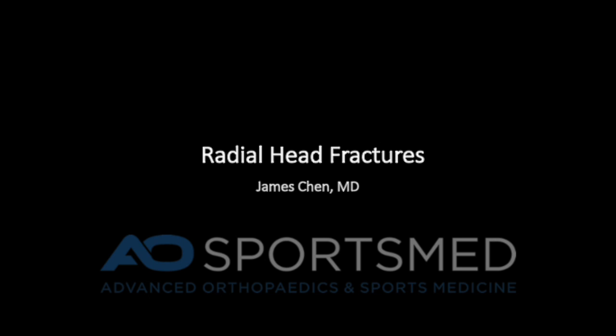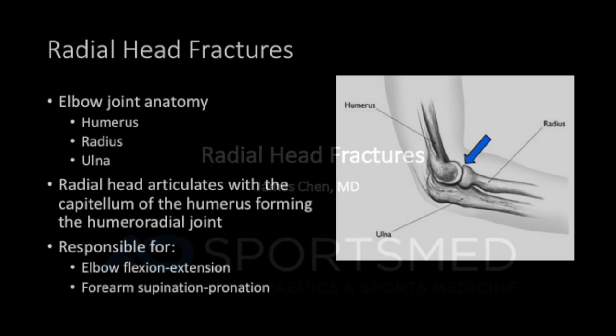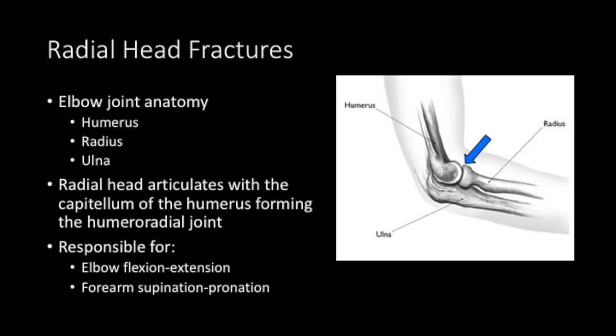This is a presentation on radial head fractures of the elbow. The elbow joint anatomy involves the humerus, radius, and ulna.